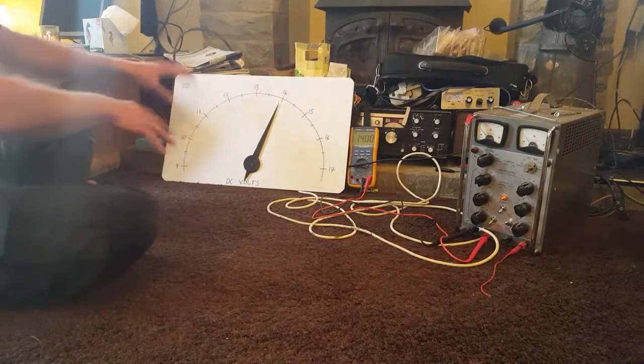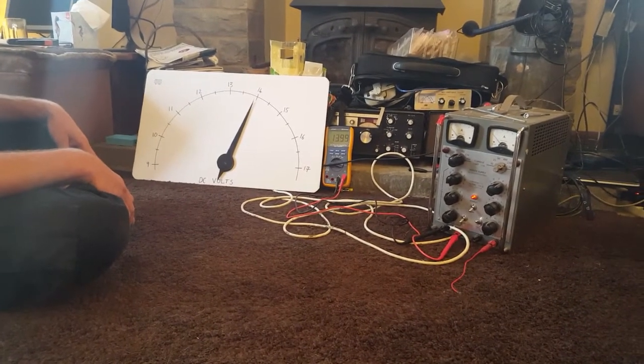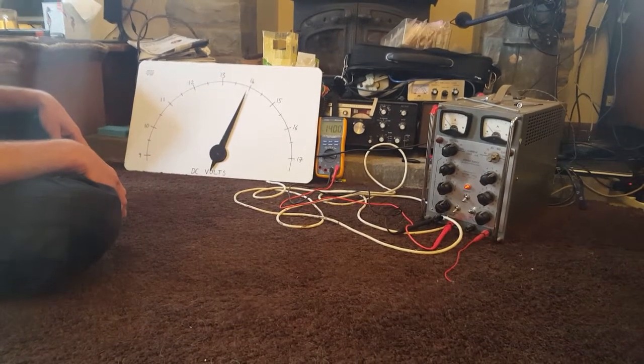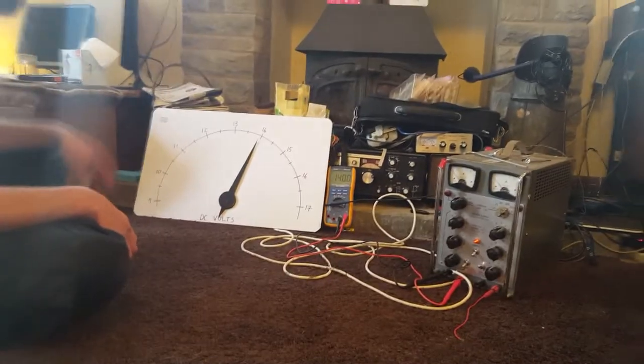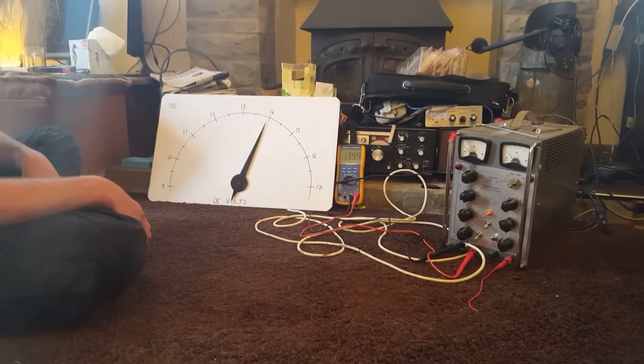You could also have indicator lights on when it reaches certain voltages, certain thresholds, alarms, all that kind of thing. So I think that's it. A very successful afternoon's project and useful use of some old IKEA packaging and bits of cardboard we have lying around.